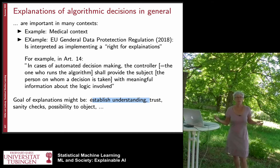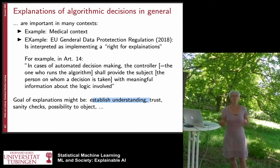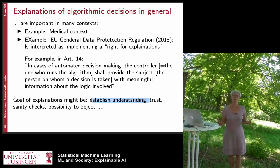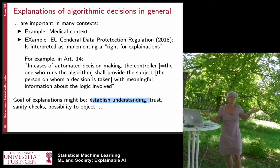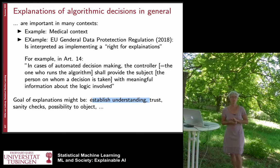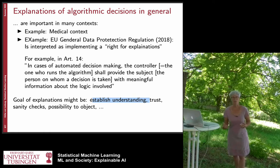The question is how we can make machine learning more explainable. As we know, there are many machine learning algorithms that are really not easy to explain to the general public. If you say you trained a support vector machine with a certain kernel and this is the outcome, that's not something anyone would understand — and even more so for deep networks. So the question is how you can provide explanations of either the working of machine learning algorithms or, most often, of the predictions that a machine learning algorithm makes.